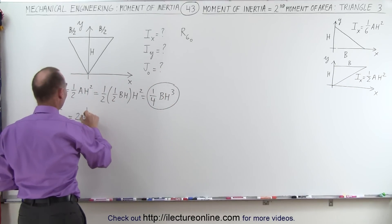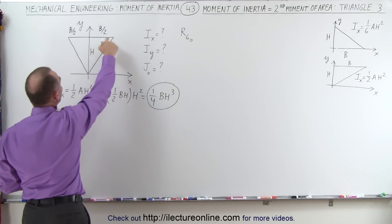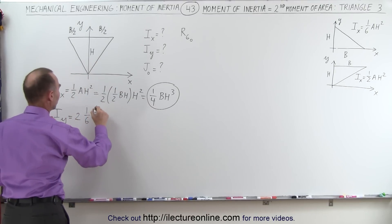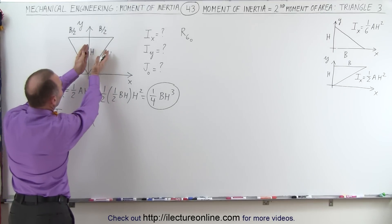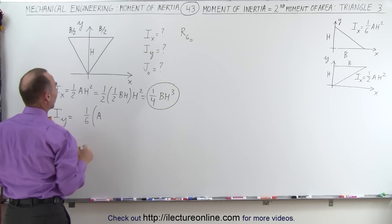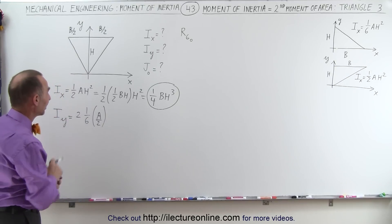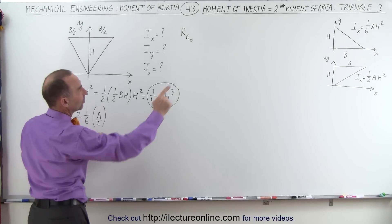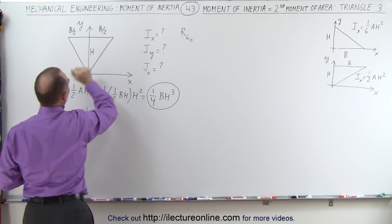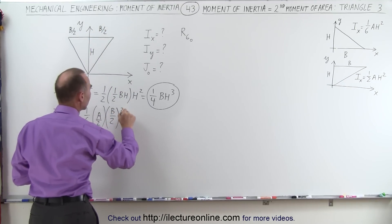We're going to take 1/6 the area of each of the two triangles. Since it's just one side and we have times 2, that becomes the area of the whole triangle — twice the area of a half triangle, or the area of the whole triangle. We then multiply that times h squared. In this case, h squared is the distance of the farthest point of the triangle relative to the axis of rotation, which would be b/2 quantity squared.